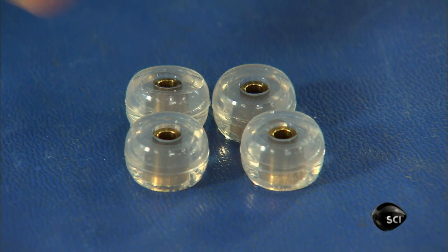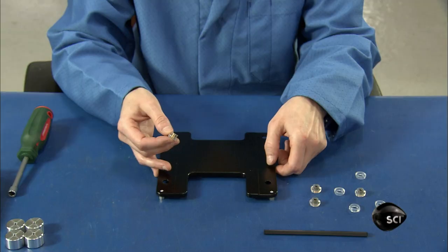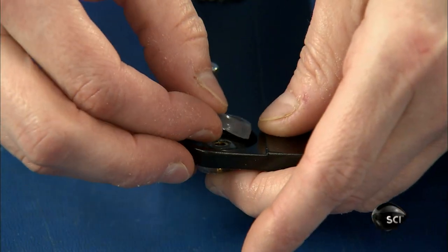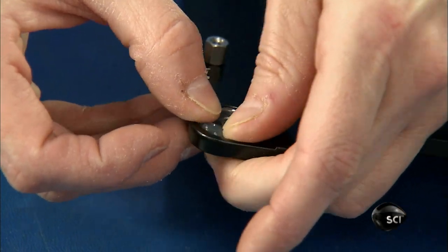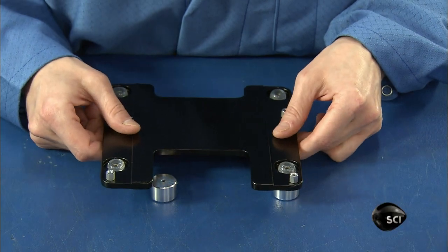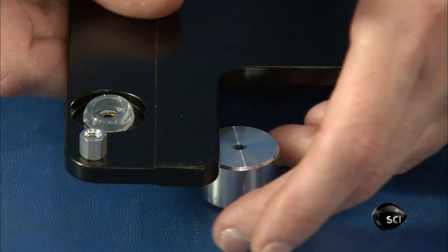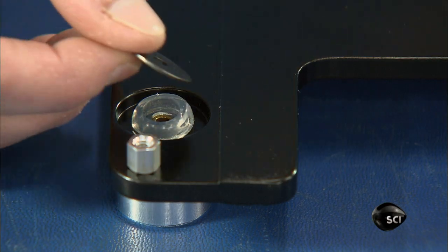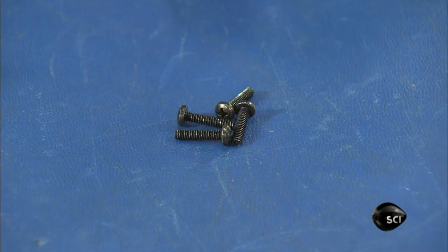These grommets are made of a special type of silicone gel that dampens vibration by converting it into heat. Workers install them in between the CD drive's support base and each of the feet, to create a floating suspension system that protects the drive from vibration.